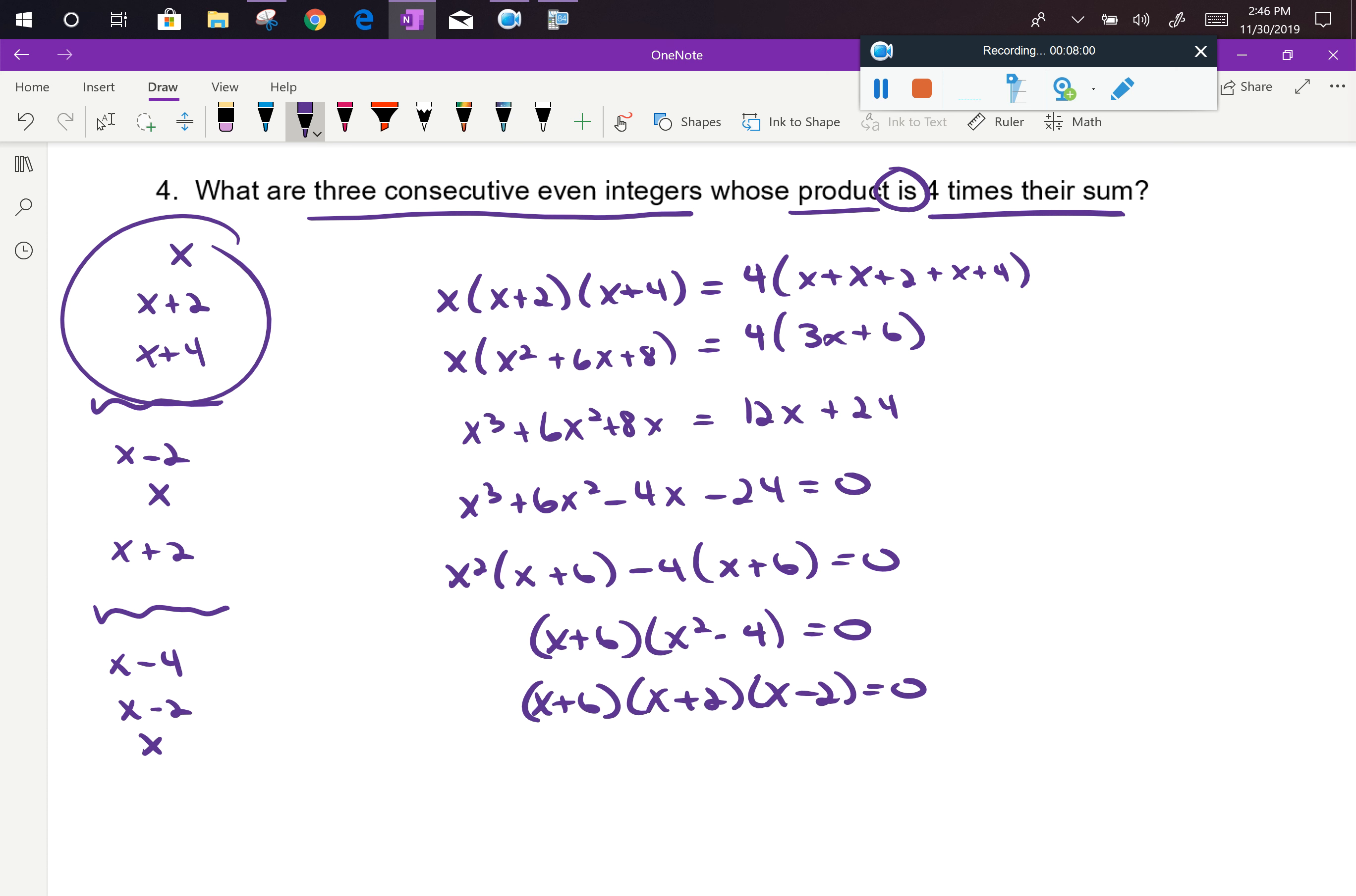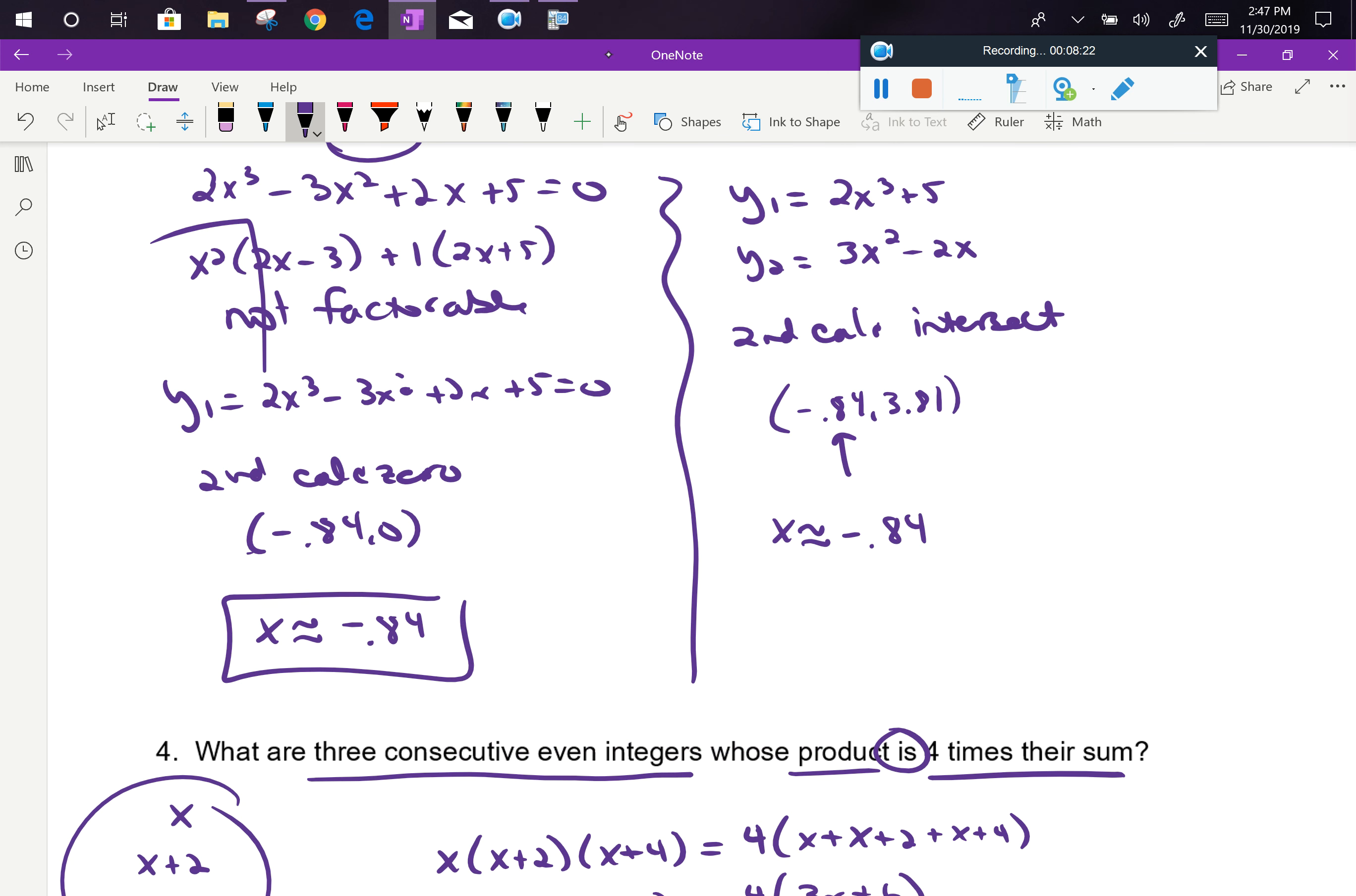Now be careful. A lot of times students want to tell me that the three numbers are x equals negative 6, negative 2, and positive 2. But think about that for a minute. First of all, those are not consecutive even integers. So it doesn't even make sense as a final answer. But in addition, notice those are all x values, and x is just the smallest number.